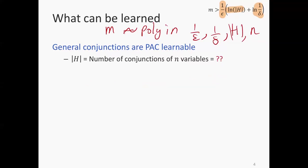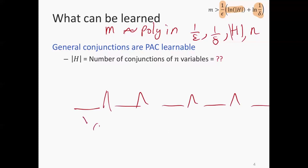The way to think about this: to count the number of conjunctions, if you have n features, think of there being n positions to be filled up. Each one of them can have either xi placed there, or a negated version of xi — together these two are called a literal. Or you don't put an xi there at all — it's empty. Similarly, I can put x2, or NOT x2, or leave a dash meaning there's no x2.